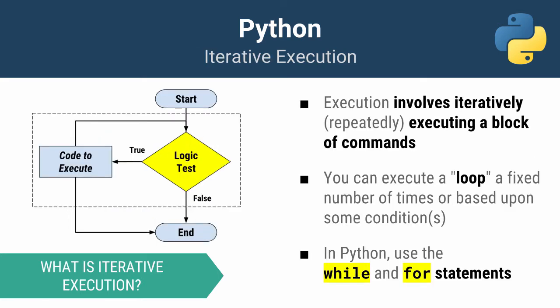Last but not least there's iterative execution. To iterate means to repeat something over and over again. In this type of execution you loop or execute the same code either a fixed number of times or until some condition is no longer true. In most languages this is implemented using while and for statements.